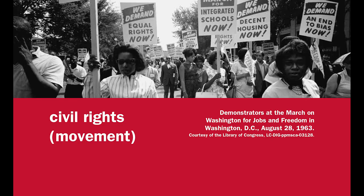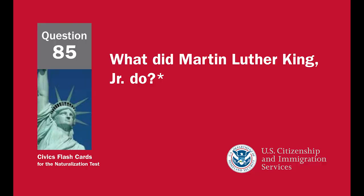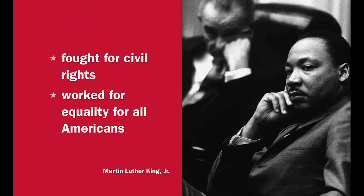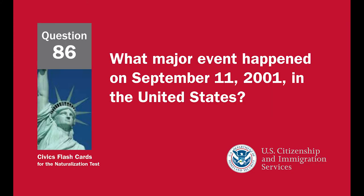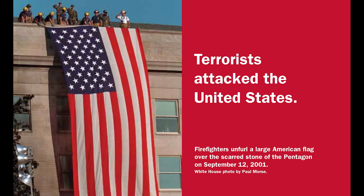What movement tried to end racial discrimination? The Civil Rights Movement. What did Martin Luther King Jr. do? Fought for civil rights, and worked for equality for all Americans. What major event happened on September 11, 2001 in the United States? Terrorists attacked the United States.